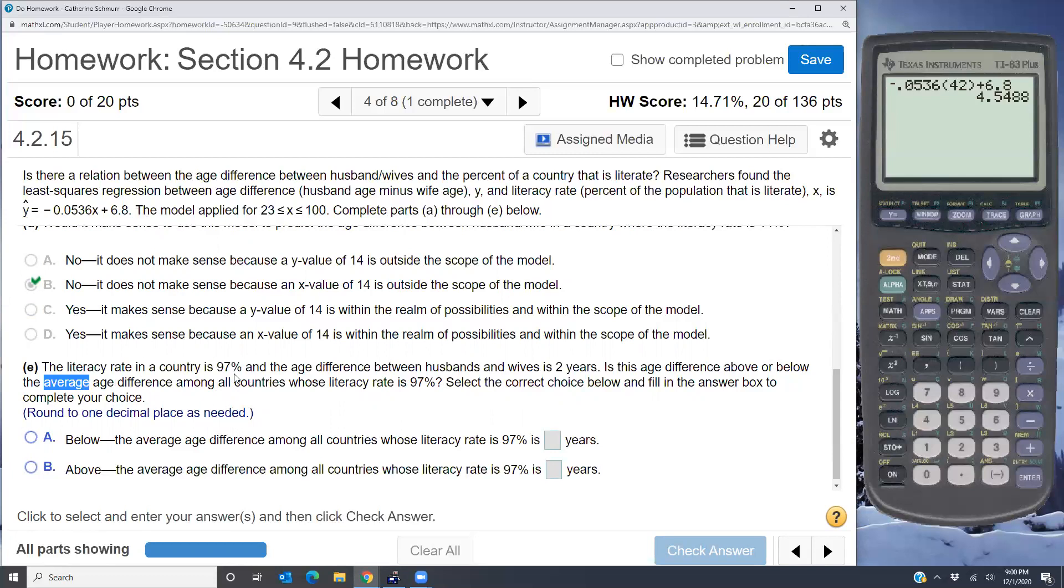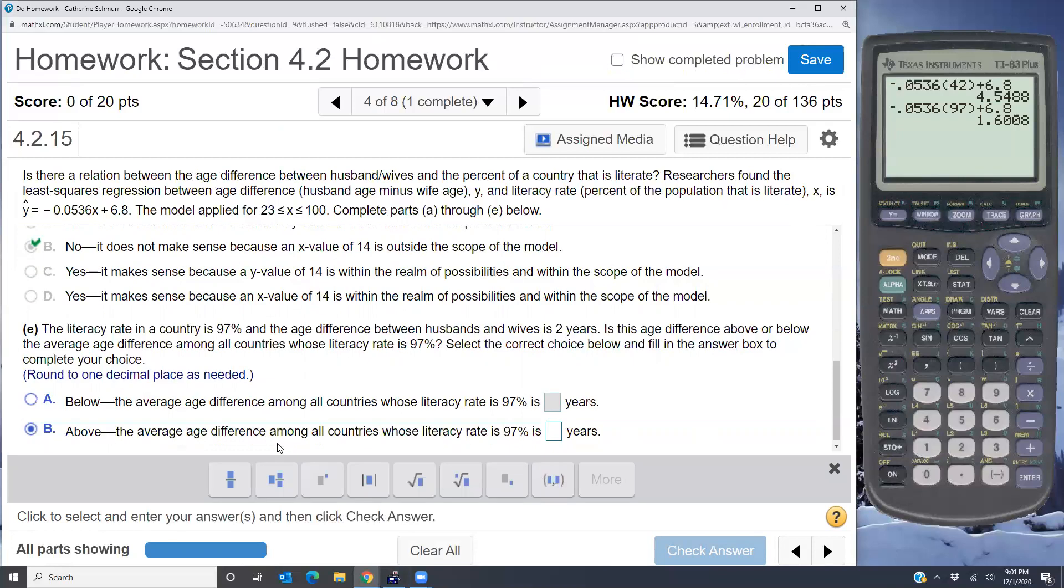So in this case 97% is within the given x range. So I'm going to go ahead and plug that in to my equation. So I'm going to plug in 97% for the x. And so I look at the number 2 years. 2 years is above the prediction. So I would go ahead and say above because the average age difference is 1.6.